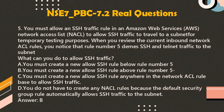Reviewing the current inbound network ACL rules, you notice that rule number 5 denies SSH and Telnet traffic to the subnet. What can you do to allow SSH traffic? A. You must create a new allow SSH rule below rule number 5. B. You must create a new allow SSH rule above rule number 5. C. You must create a new allow SSH rule anywhere in the network ACL rule base. D. You do not have to create any NACL rules because the default security group rule automatically allows SSH traffic to the subnet. Answer: B.